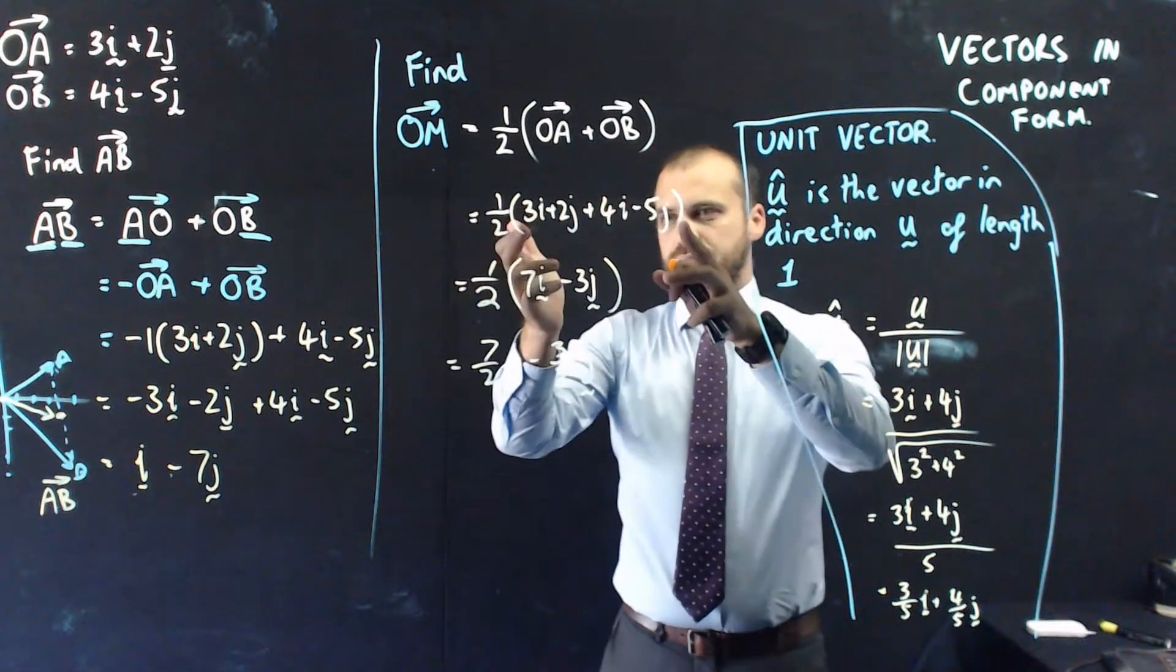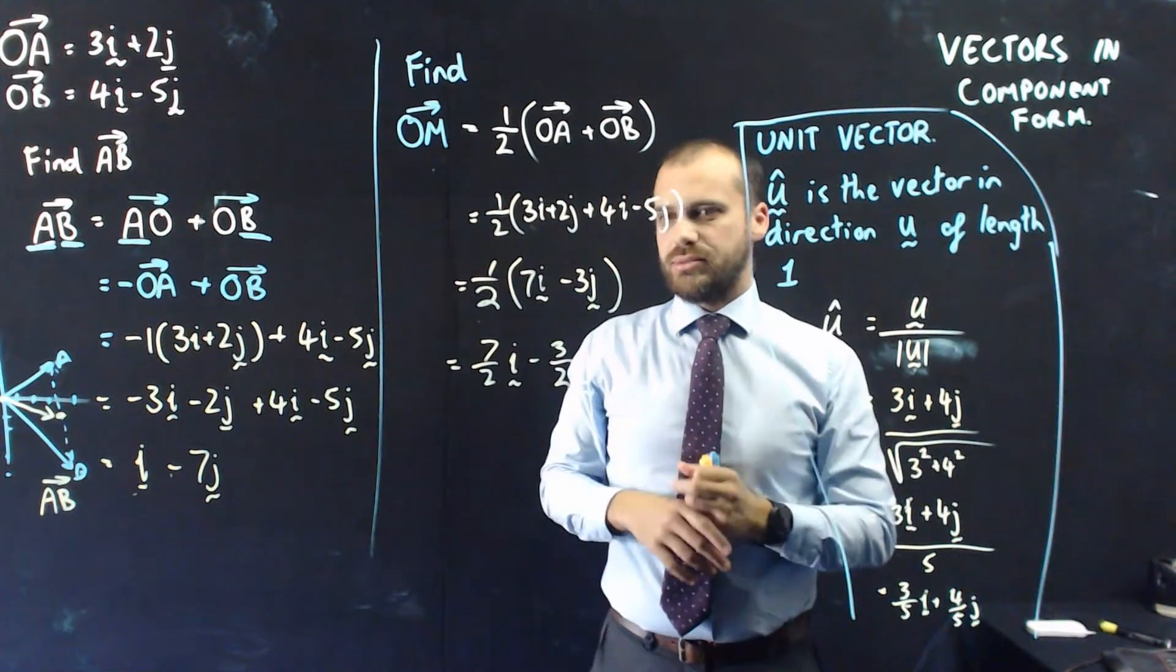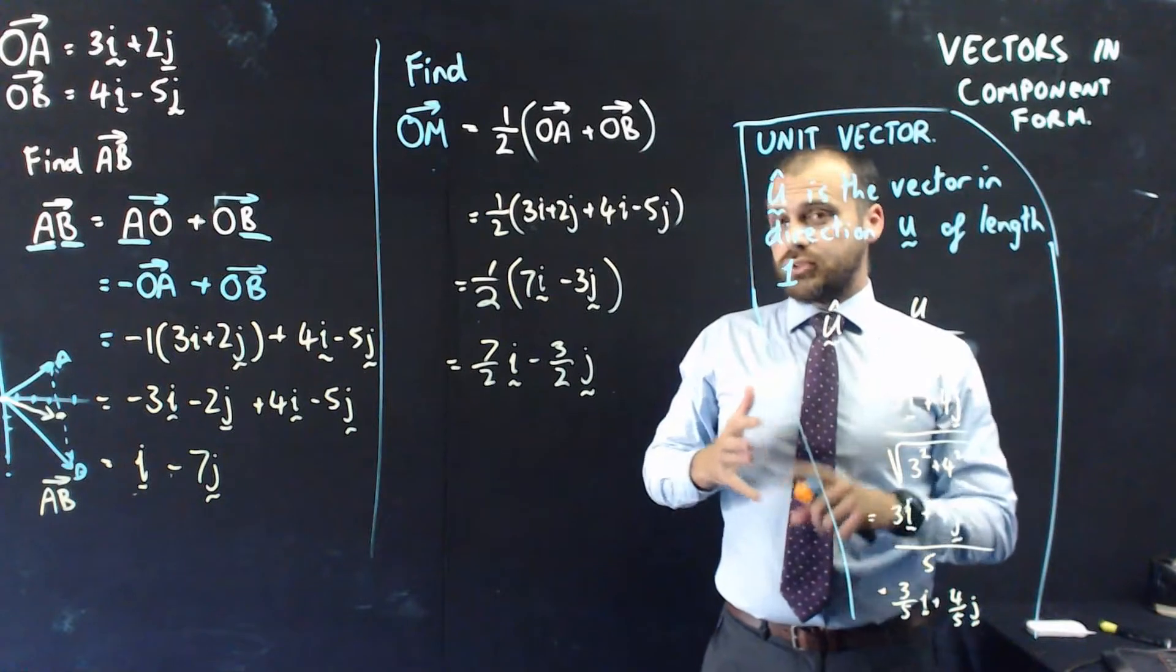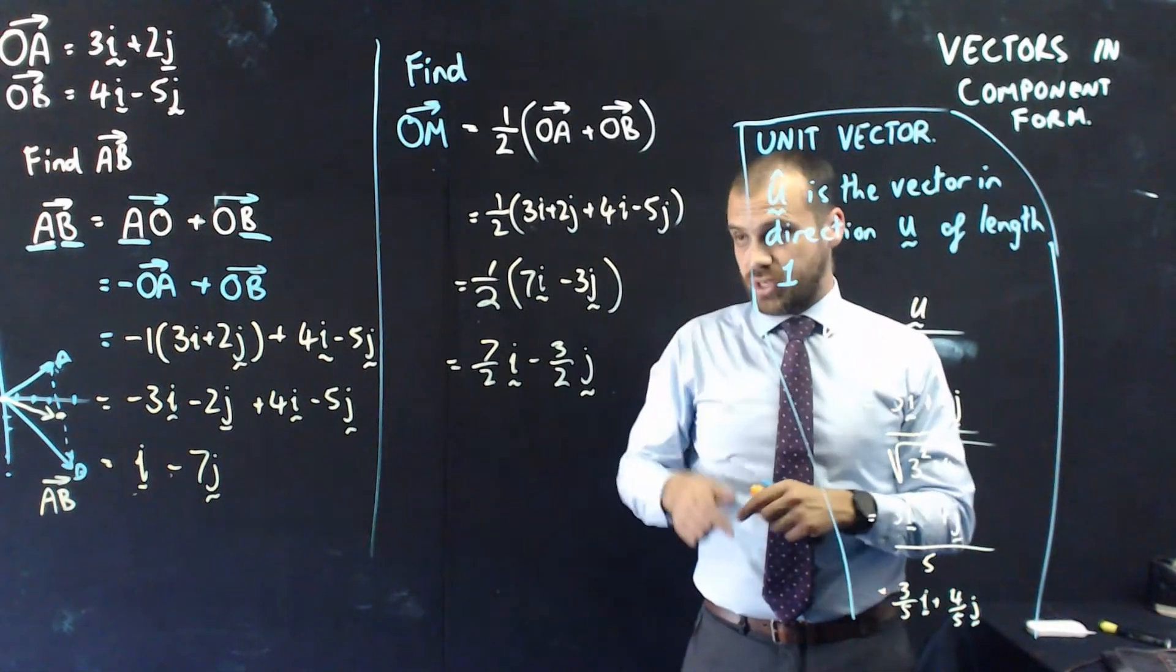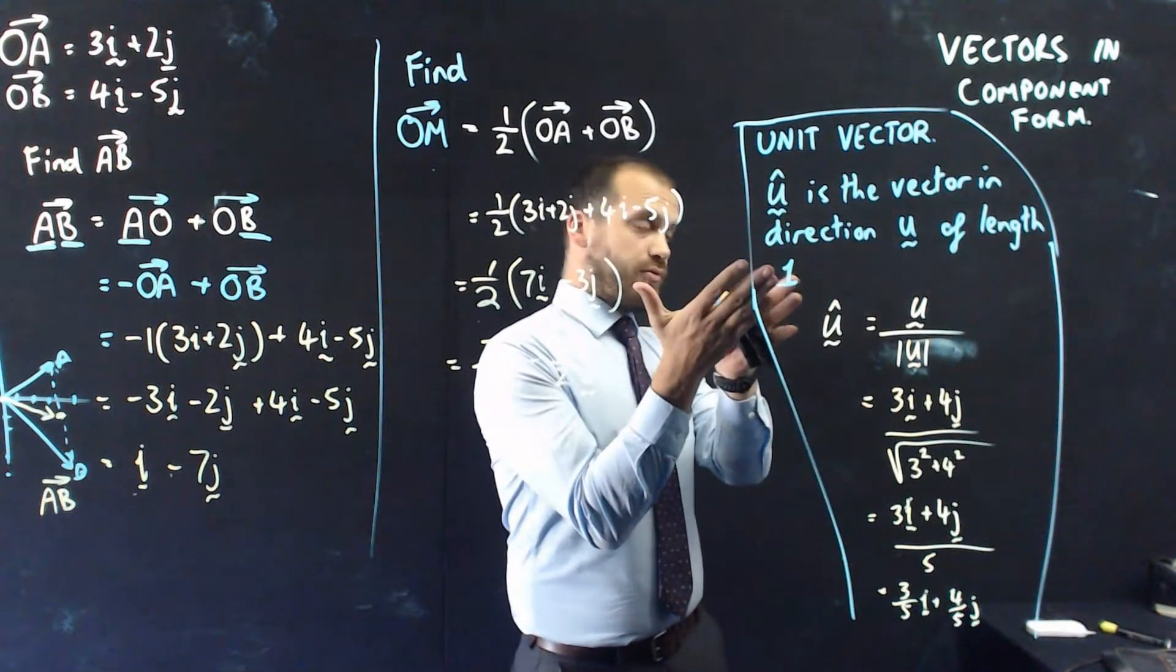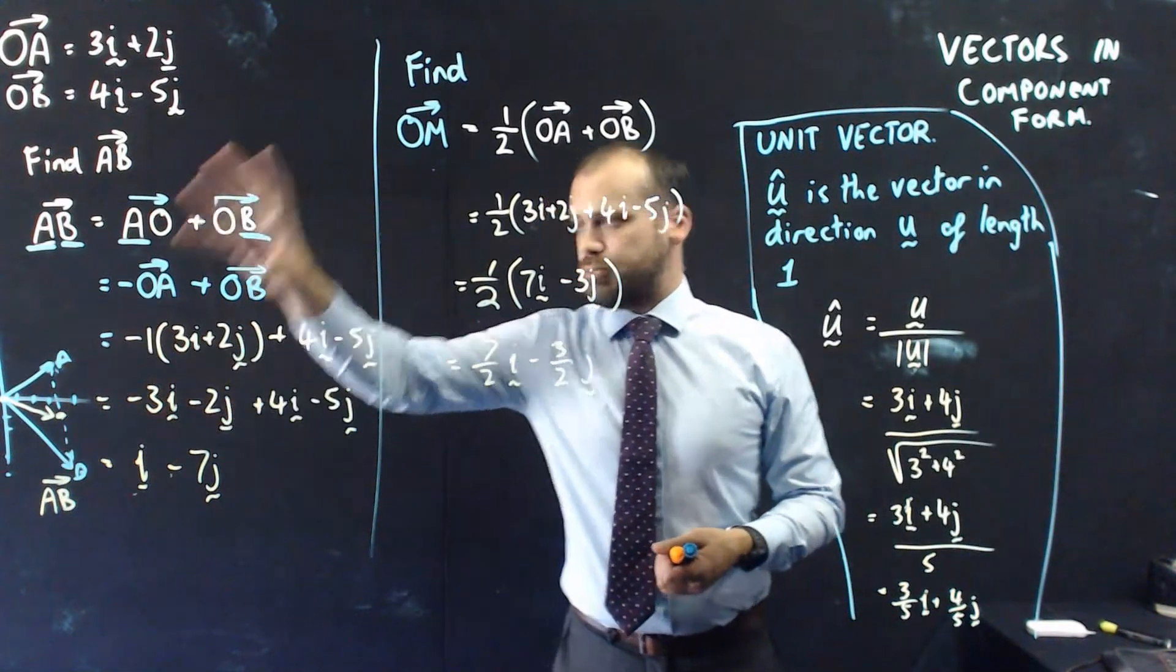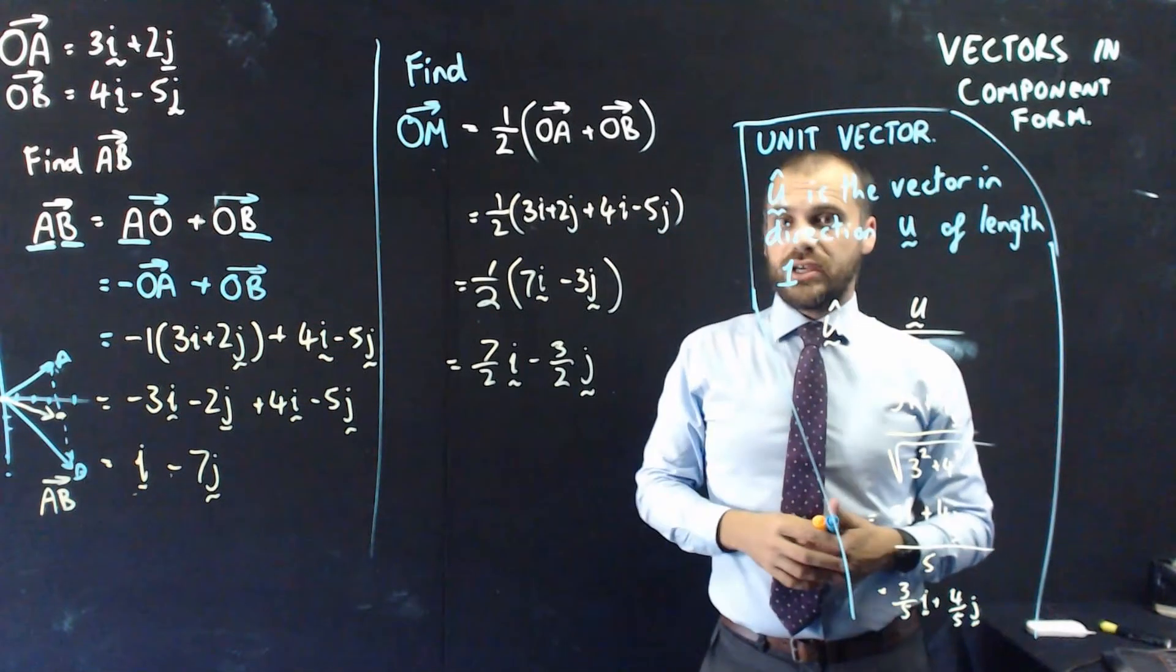We've seen that before, but using component form, it's pretty straightforward now, it just becomes some pretty basic algebra. Okay, that's heaps of stuff on vectors in component form. We've looked at the I and J components, which are unit vectors. We've looked at magnitude, we've looked at unit vectors and what the unit vector is. We've looked at finding a vector between two position vectors using component form, and then finally, we've found a midpoint vector.